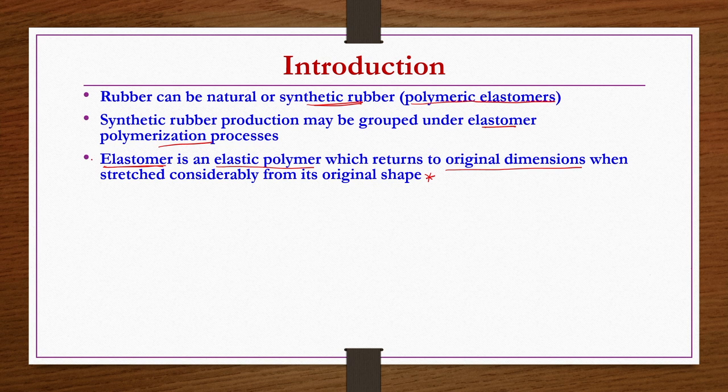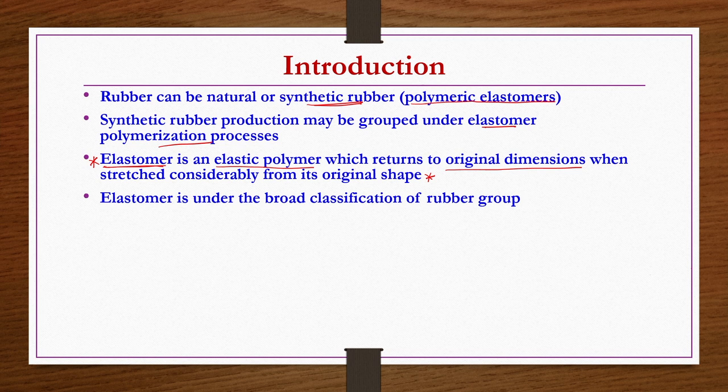An elastomer is defined as a material that, when you apply external force, undergoes stretching or elongation, but when you remove the force the material gets back to its initial position. If it completely returns to its initial position or shape, it is known as a perfect elastic material. Elastic polymers are materials which return to original dimensions when stretched considerably. Elastomer is under the broad classification of the rubber group.